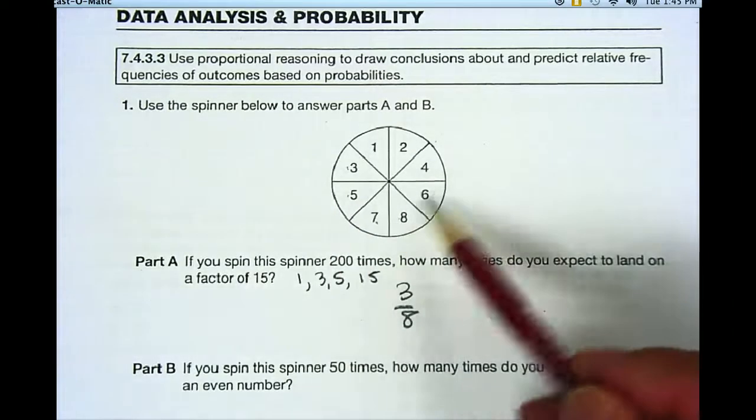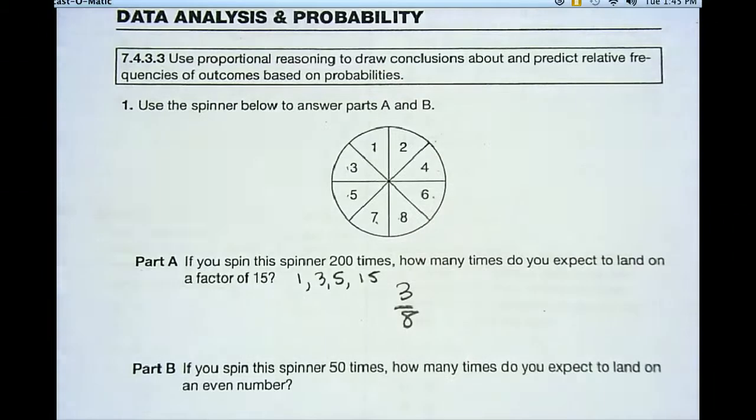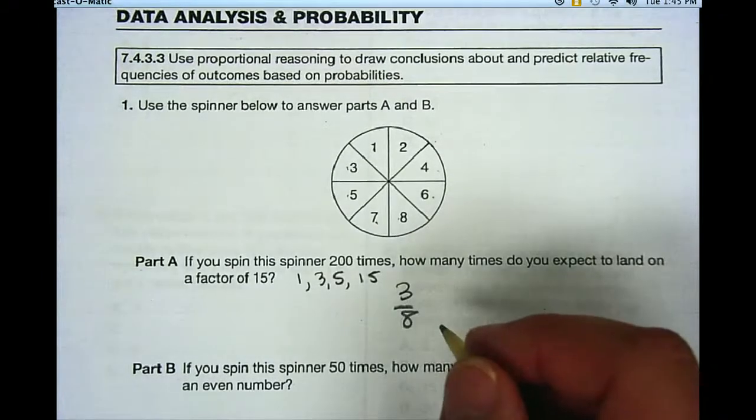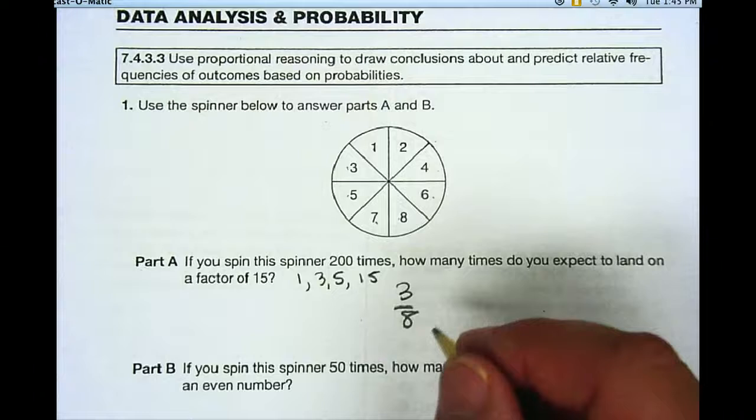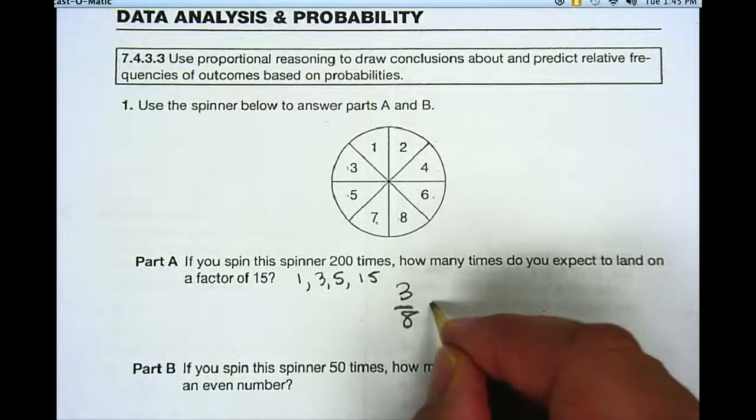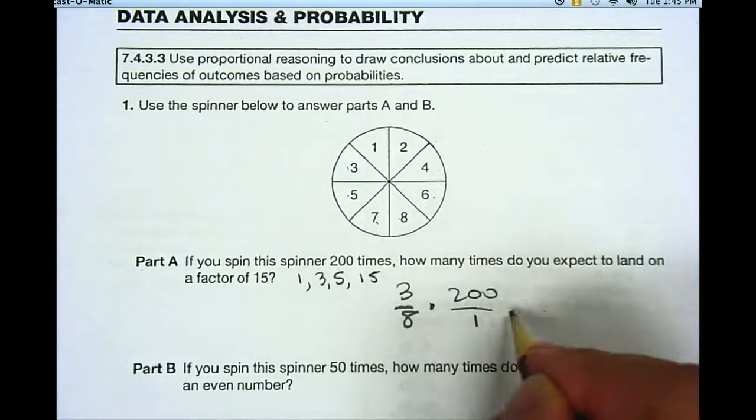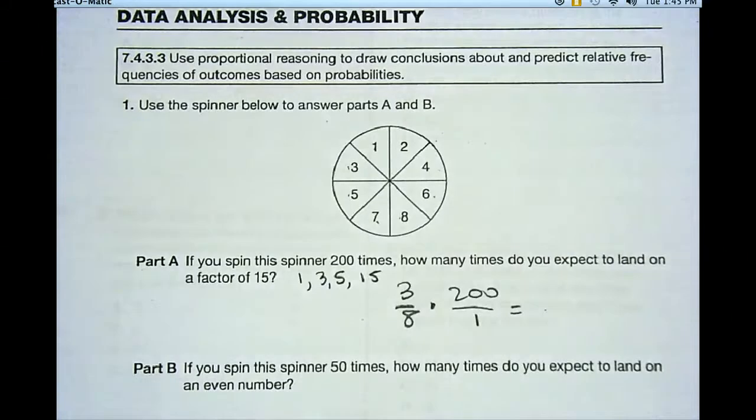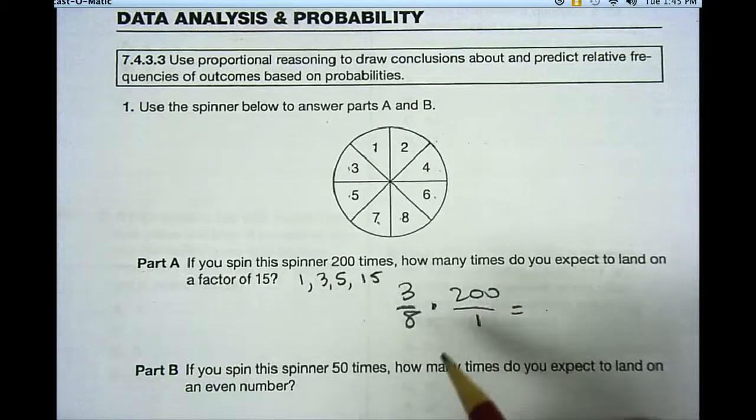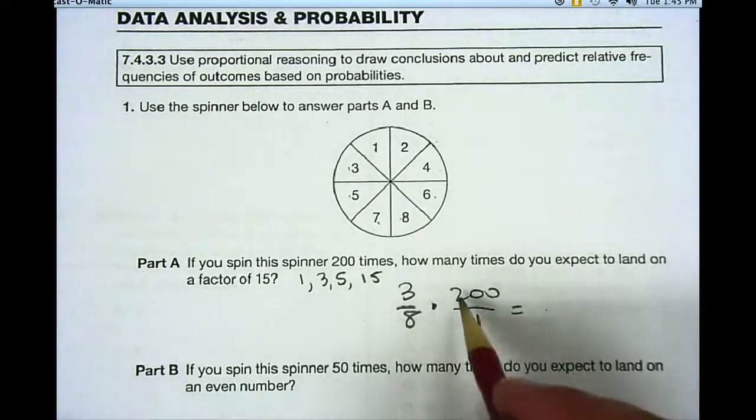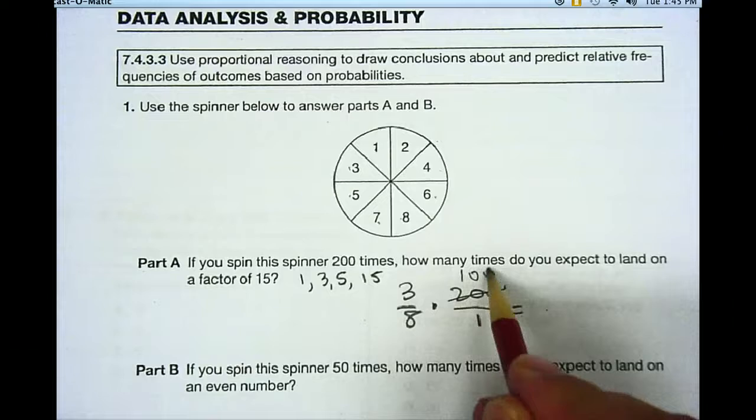The other 5 are not factors of 15. So I have a 3/8 chance of getting a factor of 15. Now if I spin that spinner 200 times, the way I find out how many times I'd expect to get it, is I multiply my probability by 200. So I'm multiplying two fractions: 3/8 times 200 over 1. Well, let's reduce it before I multiply it. So 8 and 200, they're both even, so I can divide them both by 2. 200 becomes 100, 8 becomes 4.